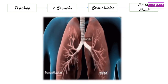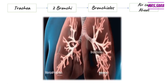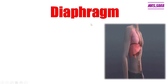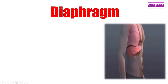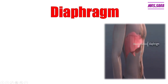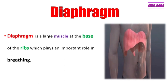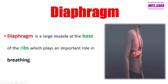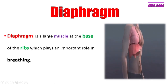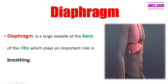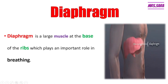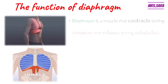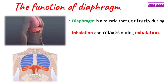Another important structure in the respiratory system is the diaphragm — the 'g' is silent, so we say 'diaphragm.' The diaphragm is a large muscle located at the base of the ribs, and it plays an important role in breathing air.